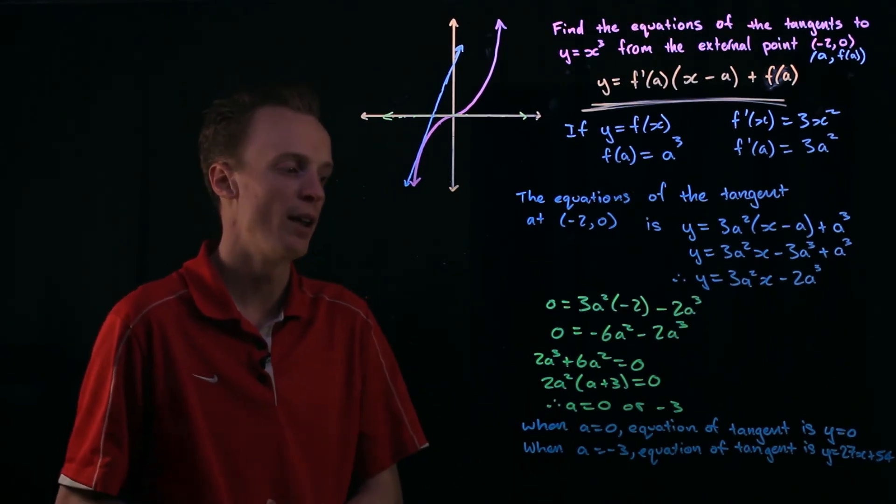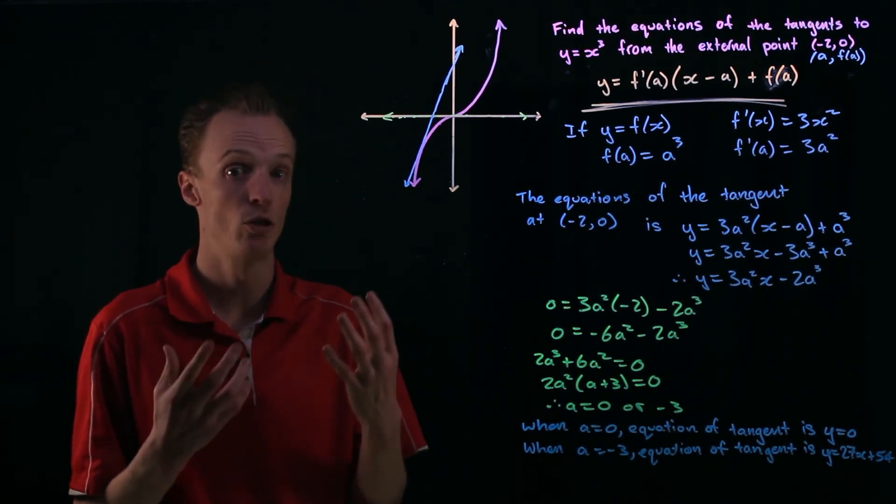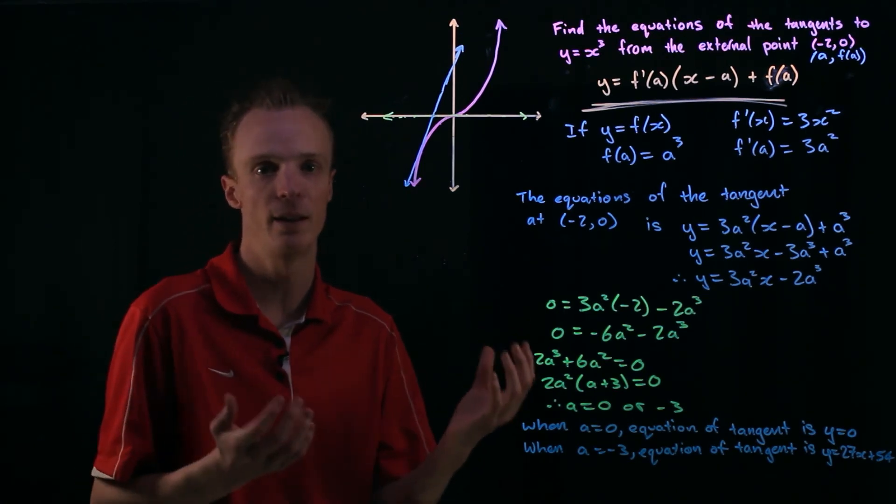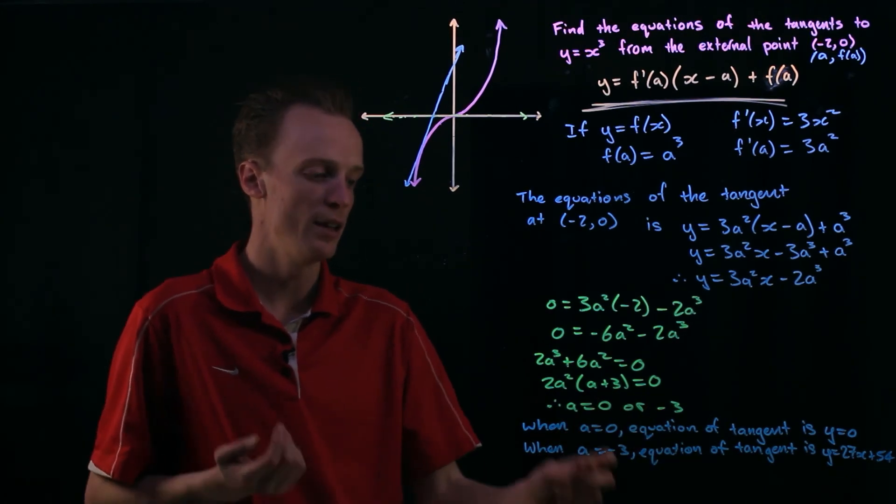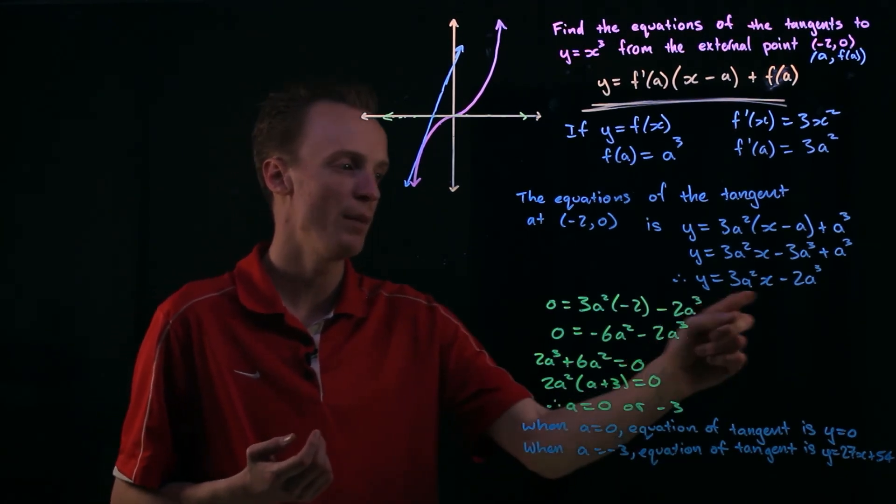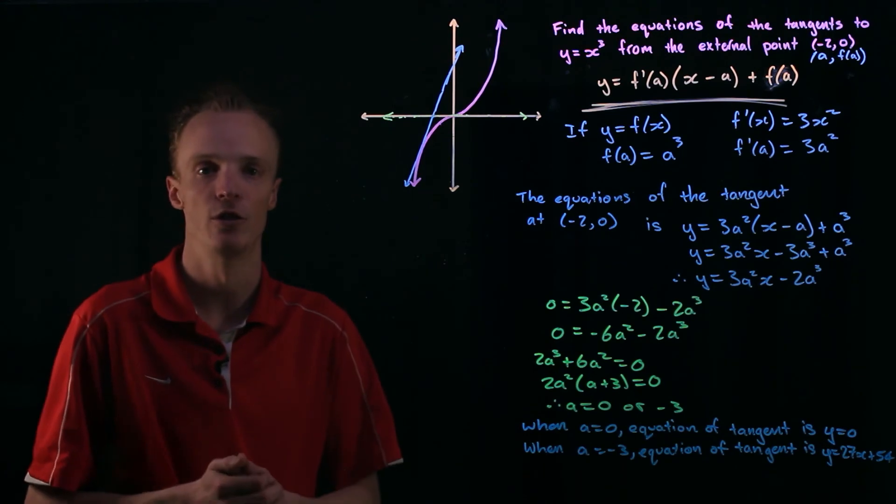Once you've got that value of a you then need to describe the two or however many linear functions there are, linear equations there are that are tangents to it. And you do that by substituting the value of a back into this little function just here.